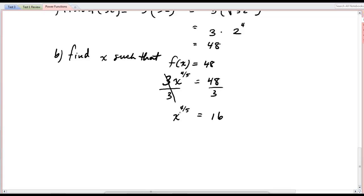And then to get rid of a 4 fifths power, we raise both sides to the 5 fourths power. So, I raise that side to the 5 fourths, and I raise 16 to the 5 fourths as well.